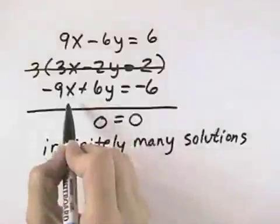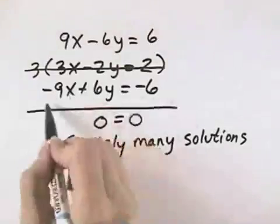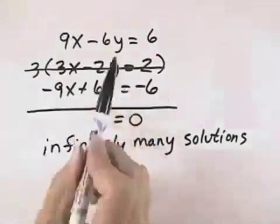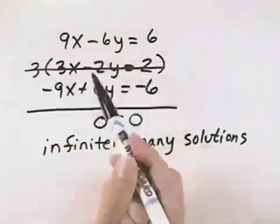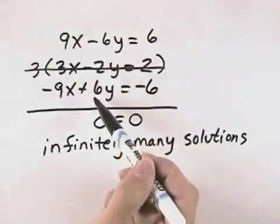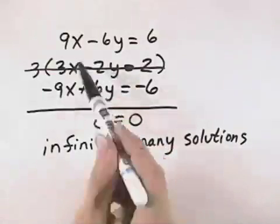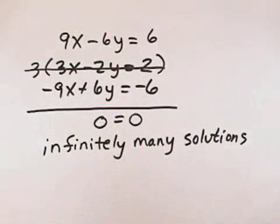but that any value that's a solution to one of the equations, any ordered pair that satisfies one of the equations, will also satisfy the other equation, because these are two different ways of expressing the same line, or two different equations that represent the same line.